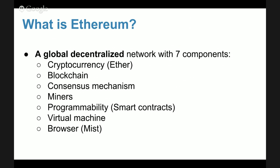What is Ethereum? Ethereum is a global decentralized network like the internet or Bitcoin, with seven components. Like Bitcoin, it has a cryptocurrency called Ether, a globally distributed database called the blockchain, and a consensus mechanism that protects the blockchain. It also has miners that update the blockchain approximately every 12 seconds.